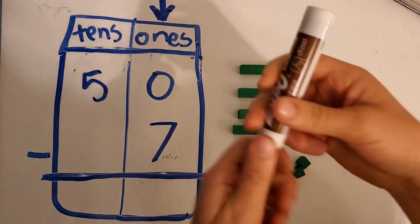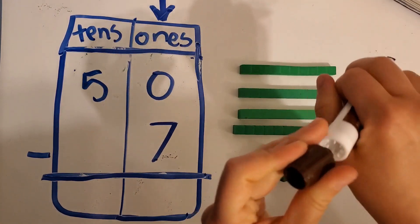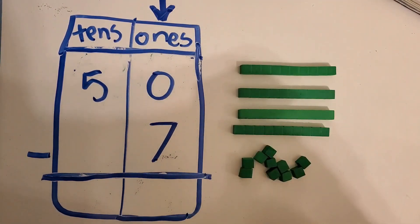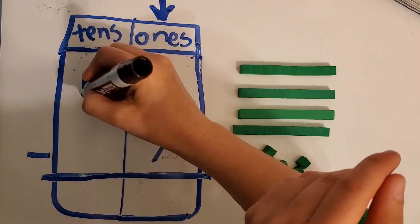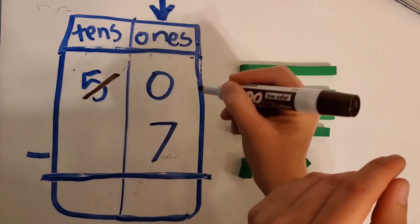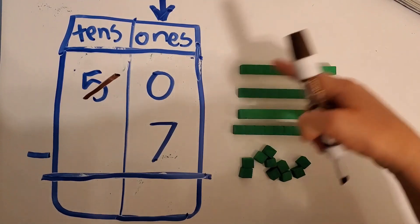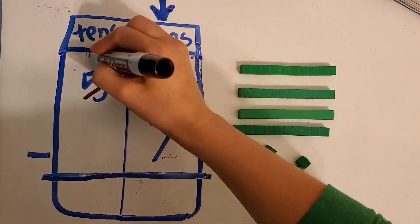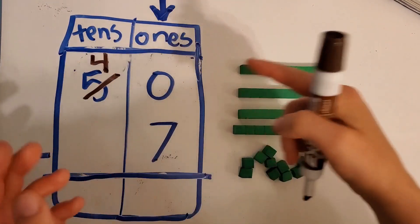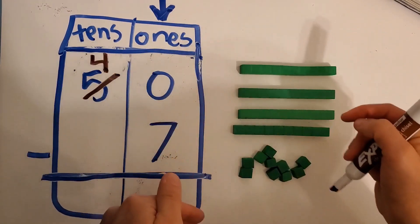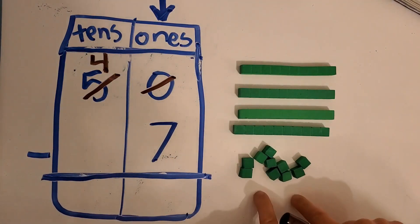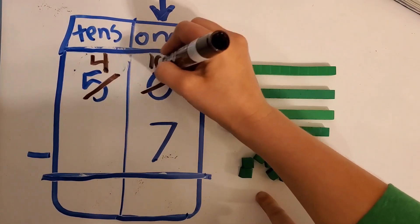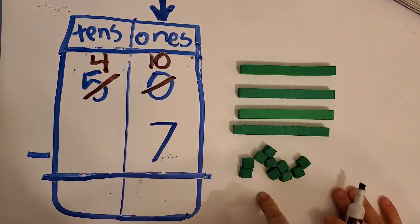Now we've got to show that we regrouped. I regrouped one ten. So how many tens do we have left here? Four. And then I regrouped that ten as ten ones. So how many ones do we have here now? Ten. Just like that.